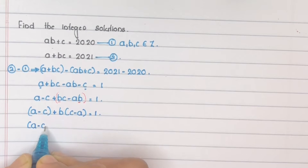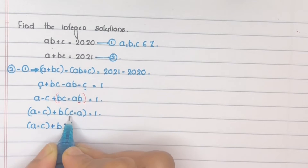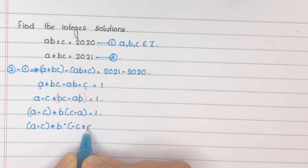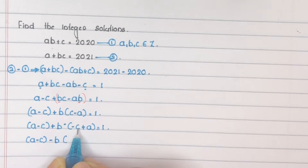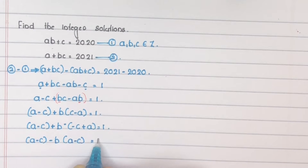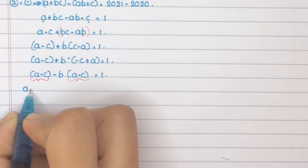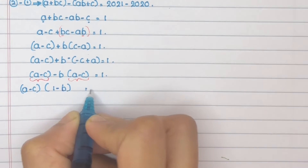From B into (C minus A), take the negative sign out: C minus A becomes minus(A minus C). So the expression becomes A minus C plus (minus B) into (A minus C), which simplifies to A minus C minus B(A minus C) equals 1. Now take A minus C as common.